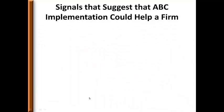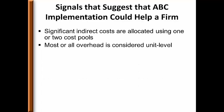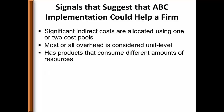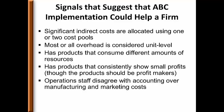What signals could suggest that a company might benefit from adopting an ABC system? If a company has significant indirect cost and is only using one or two cost pools, or has most overhead considered unit-level, it may benefit. A company may have products that consume different amounts of resources, products that consistently show small profit though they should be profit-makers, or disagreements among accounting, manufacturing, and marketing people over the real cost of products.